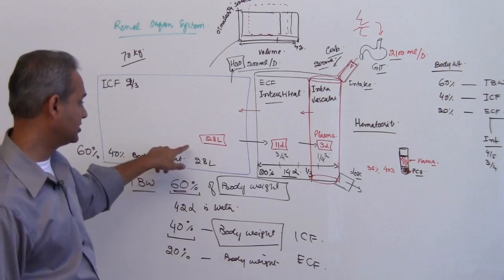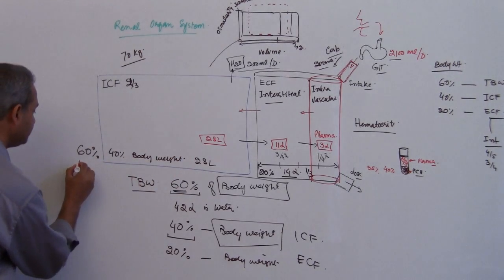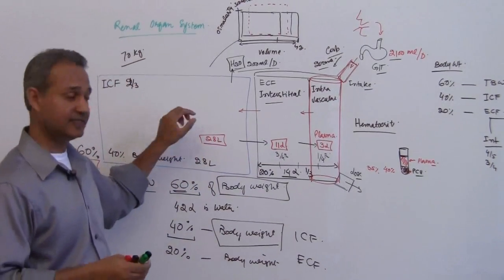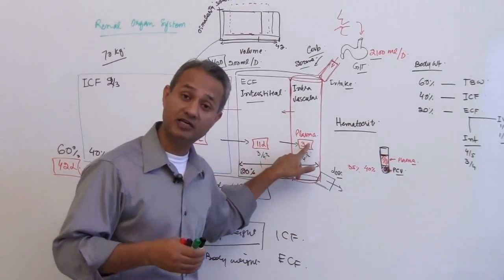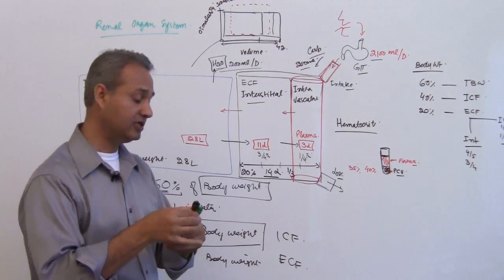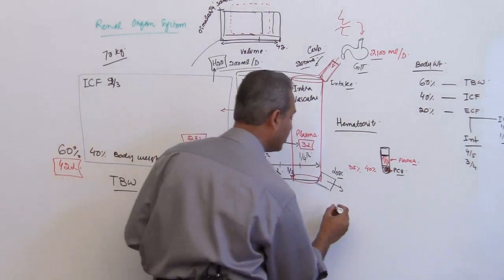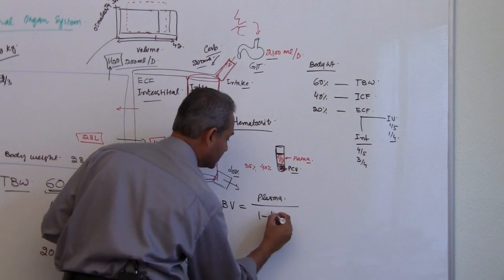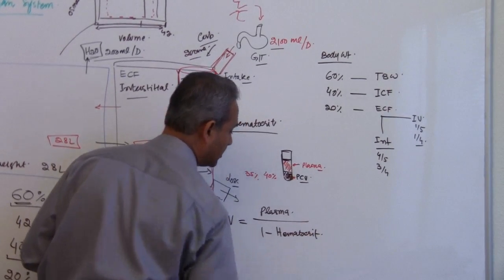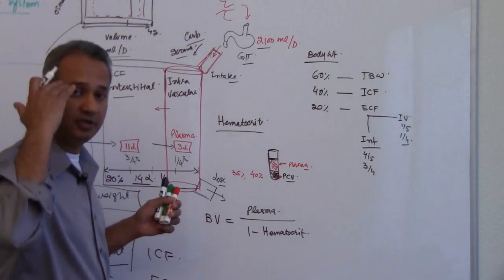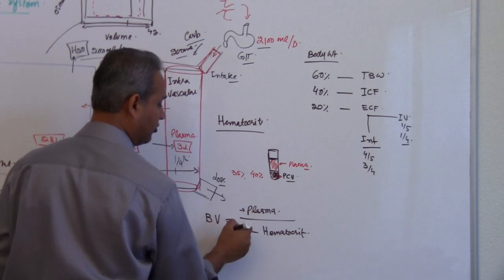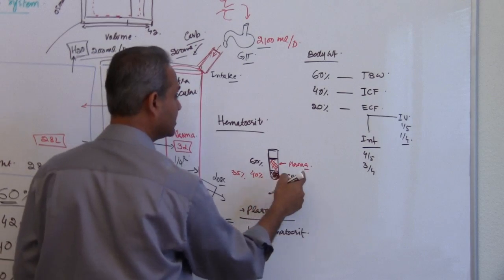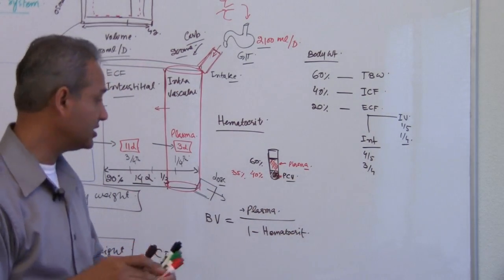For a 70 kg person: total body volume is 60% = 42 liters, distributed as 28 liters intracellular, 11 liters interstitial, and 3 liters plasma. With 3 liters of plasma, the blood volume formula — which is very commonly tested on the USMLE — is: blood volume = plasma volume divided by (1 minus hematocrit). The plasma volume represents a specific percentage of total blood volume; for example, if hematocrit is 40%, plasma is 60%, and if plasma volume is 3 liters, that represents 60% of total blood volume.